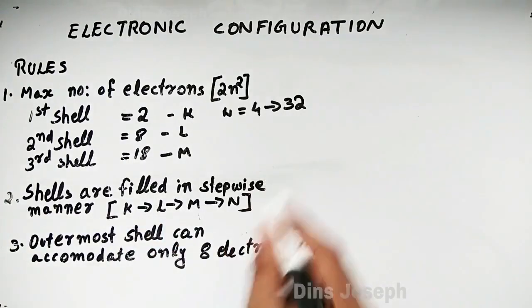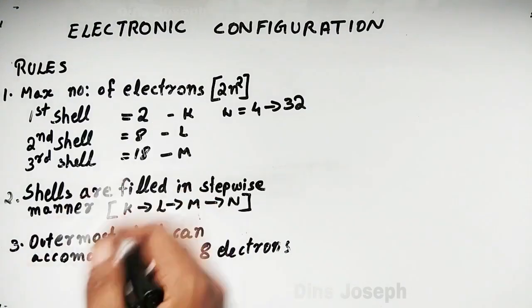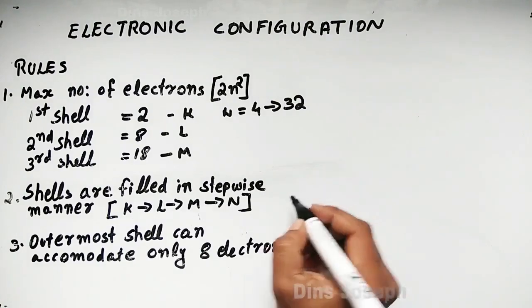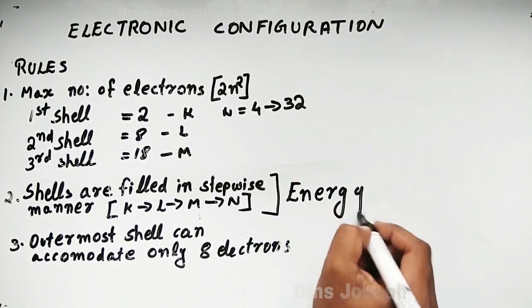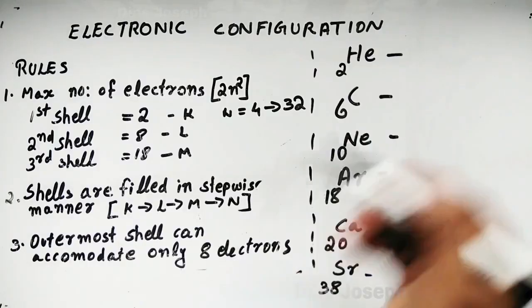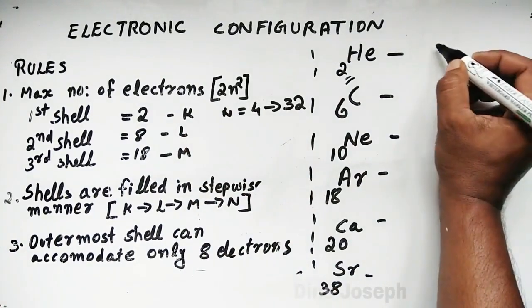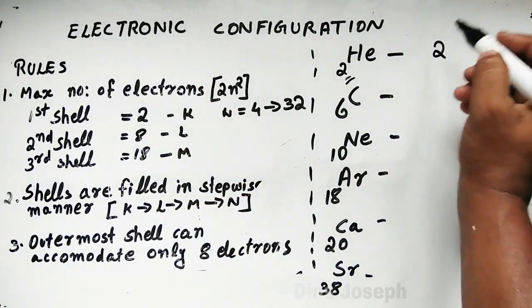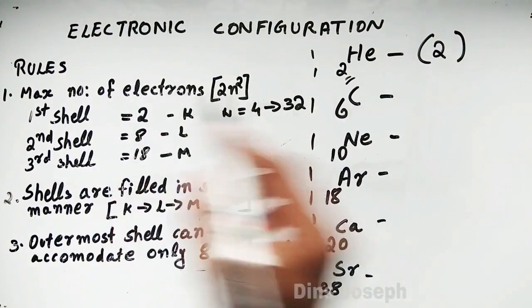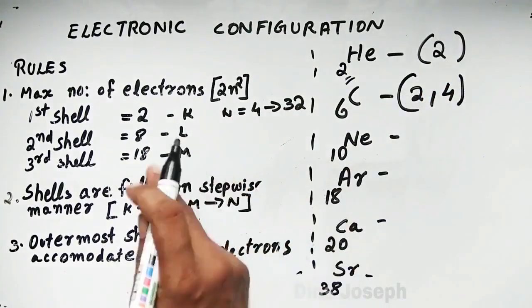Second rule: shells are filled in stepwise or increasing order of energy. Third rule: the outermost shell can accommodate only 8 electrons. For example, helium has 2 electrons — K is 2. Carbon has 6 electrons — K is 2, L is 4. Neon has 10 electrons — K is 2, L is 8.